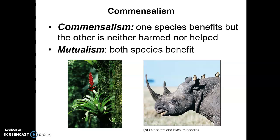The example of mutualism is on the right — there is a bird called an oxpecker and a rhinoceros shown in the photograph. The birds eat bugs or insects that are on the hides of the rhinoceros. That benefits the bird because it's a source of food, and it benefits the rhinoceros because it protects its hide. So that's mutualism.